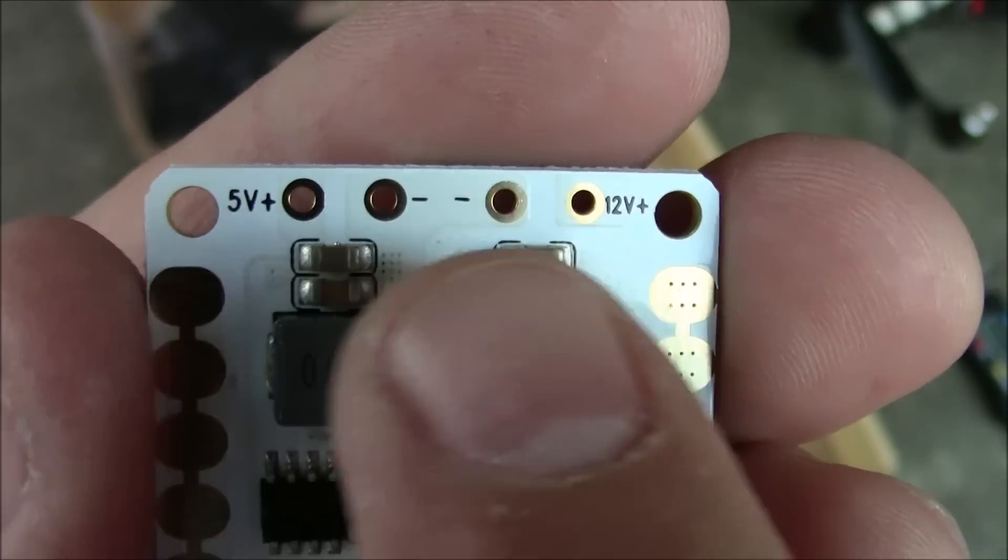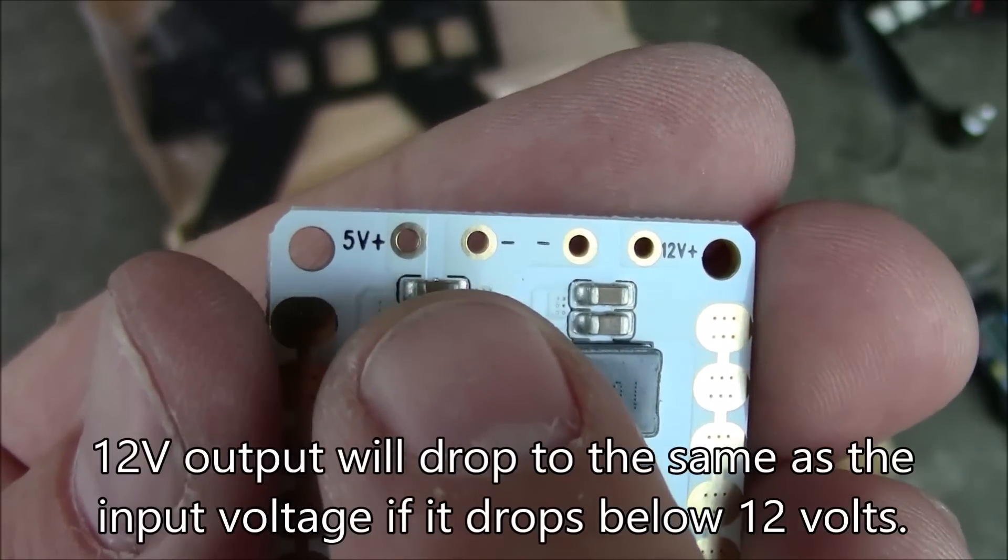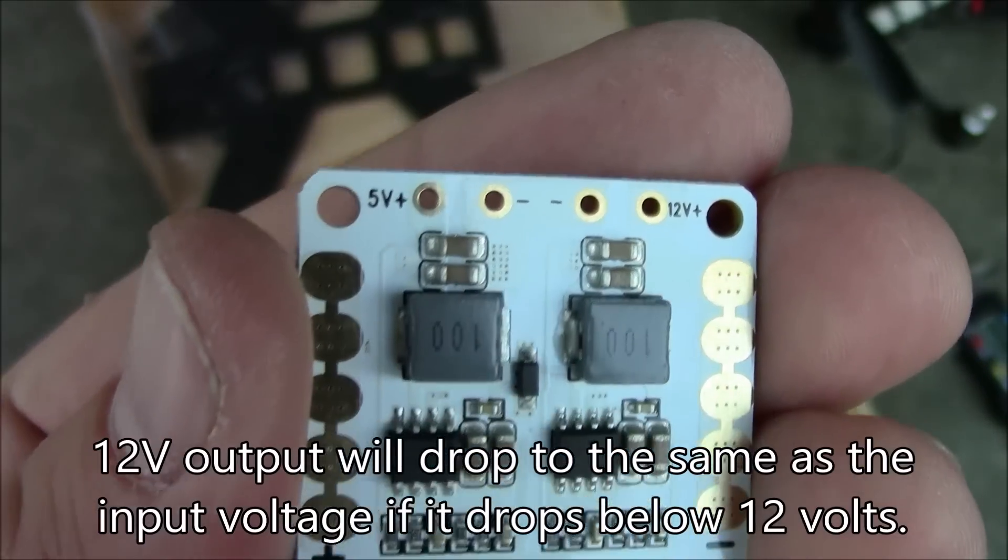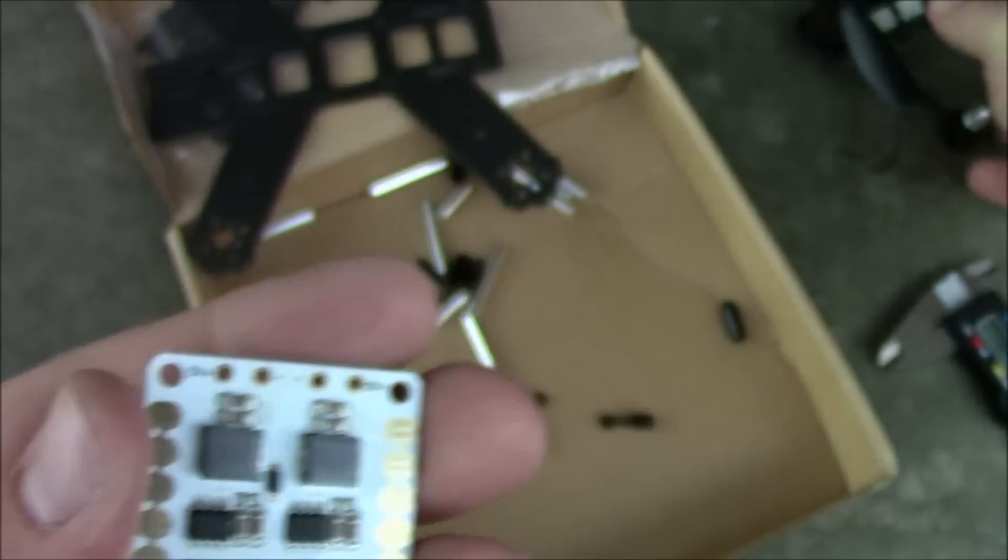Up here on the top it has a 12 volt output and this would be for like your video transmitter and a 5 volt output which would be for your flight board. And I've had pretty good luck with this on my other quadcopter on my LS210.